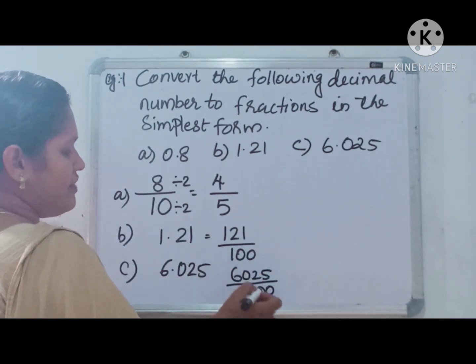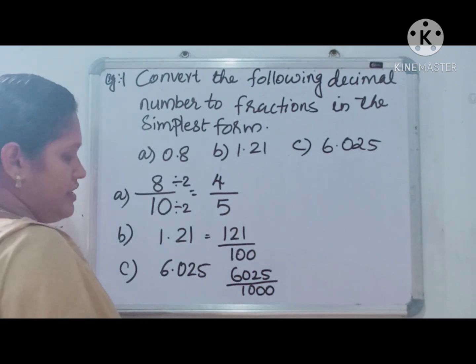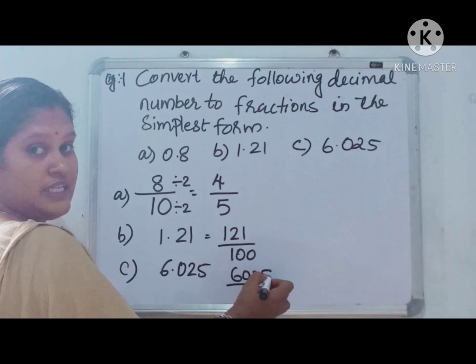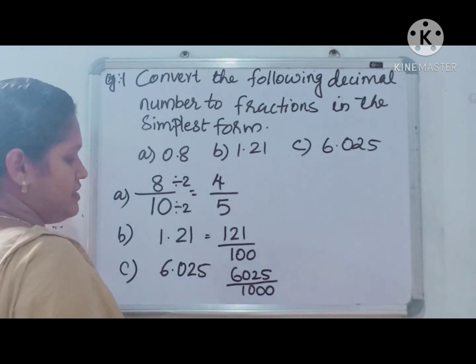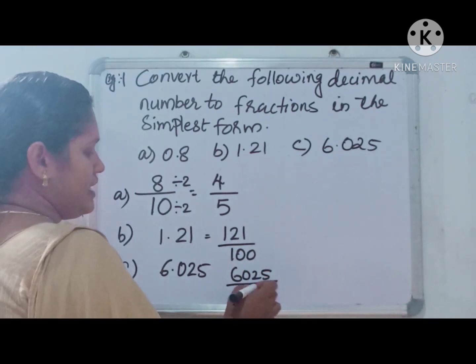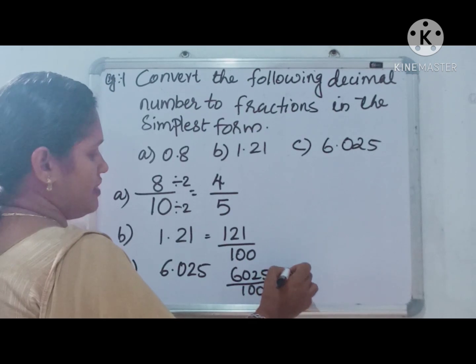Both are divisible by 5. Here ends with 0, here ends with 5. Divisibility test, you have to remember that. Then we can cut both sides by 5.